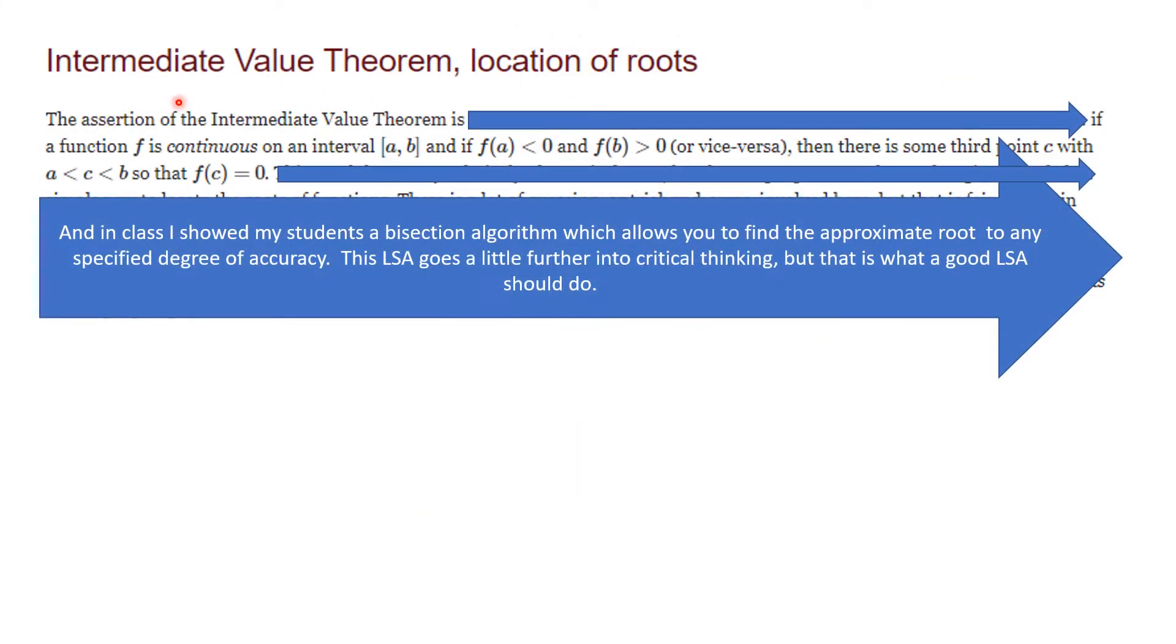By way of introduction, recall that the Intermediate Value Theorem for Continuous Functions can be used to help you locate approximate roots. The assertion of the Intermediate Value Theorem is that if you have a continuous function f on a closed interval [a, b], and if f is negative at one endpoint and positive on the other endpoint, then there has to be a third point c between a and b such that f(c) equals zero.